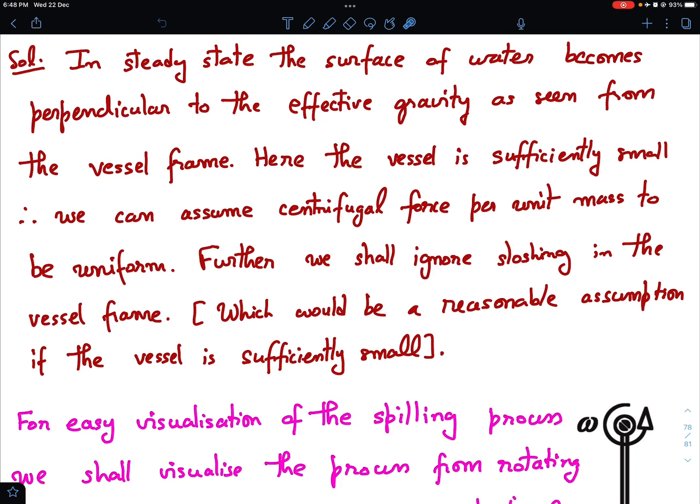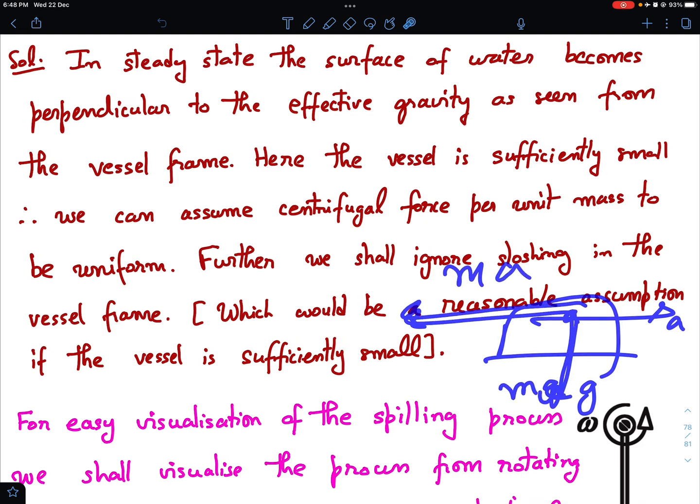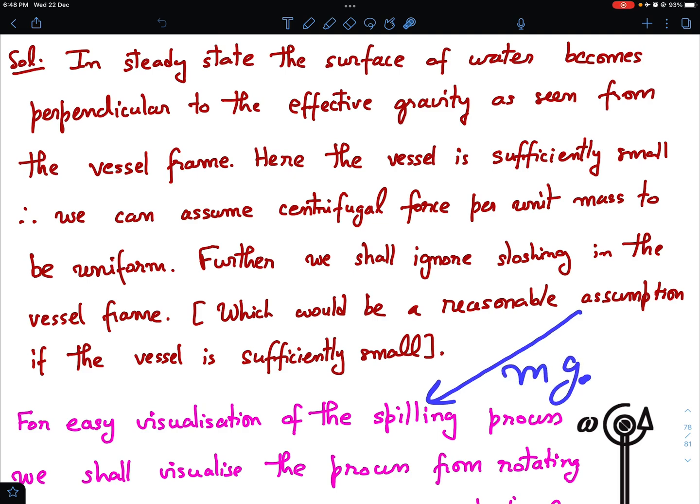All of us know that the water takes a level surface in whichever direction gravity acts, the water surface is perpendicular to that. In steady state water surface becomes perpendicular to the effective gravity. Now, what I mean by effective gravity: suppose there is a vessel which is accelerating. There is a real gravity and the pseudo force which is also proportional to mass. Since both forces are proportional to mass, I can combine them into a single force and I call it m times g effective.